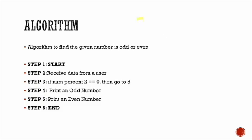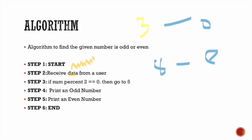The problem is: the first step is to receive data from the user, or receive a number from the user. The second step is our main logic, and the third step is to find the other rules. In the next step, we have an arithmetic operation.